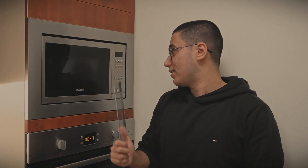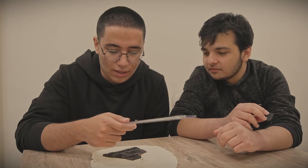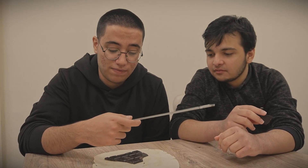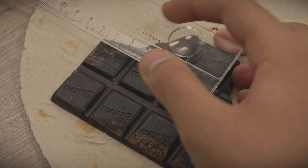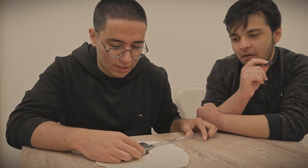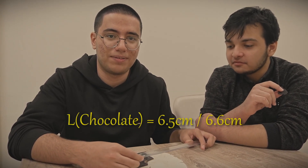Now we are going to turn the microwave on for 10 seconds and see the results. Even though our assistant ate some chocolate, we can still measure the distance. This is the first point and this is the second point, so the distance between them is about 6.5 or 6.6 centimeters.